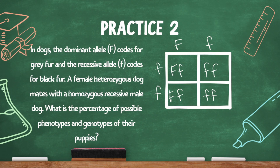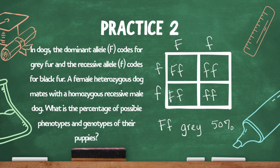So what is the percentage of possible phenotypes and genotypes of their puppies? Half of them — 50% — have the genotype big F, little f, which gives the phenotype gray fur. The other 50% have the genotype little f, little f, so those ones will have black fur, also at 50%.